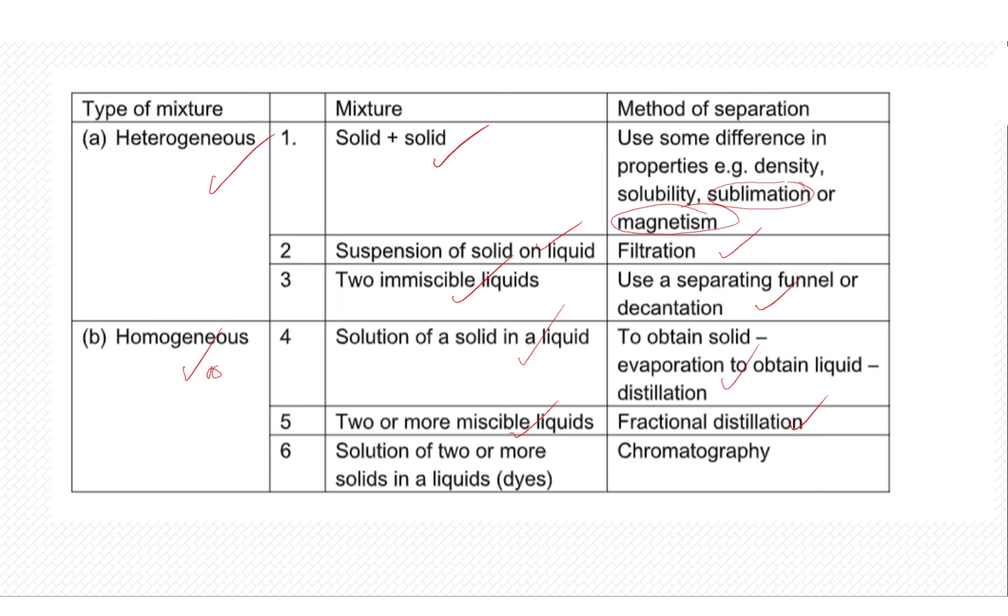And finally, if you have a solid that mixes in a liquid, especially in dyes, when we talk about colors, the process that we are going to be using is going to be called chromatography. So you see in the mixtures, method of separating those mixtures will entirely depend if it is heterogeneous or if it is homogeneous in nature.